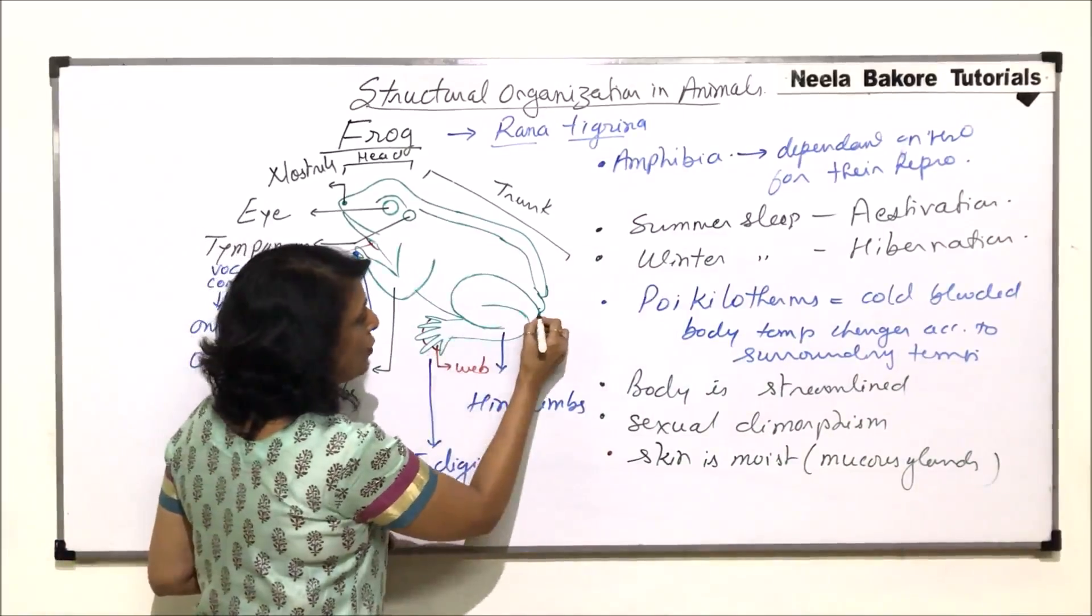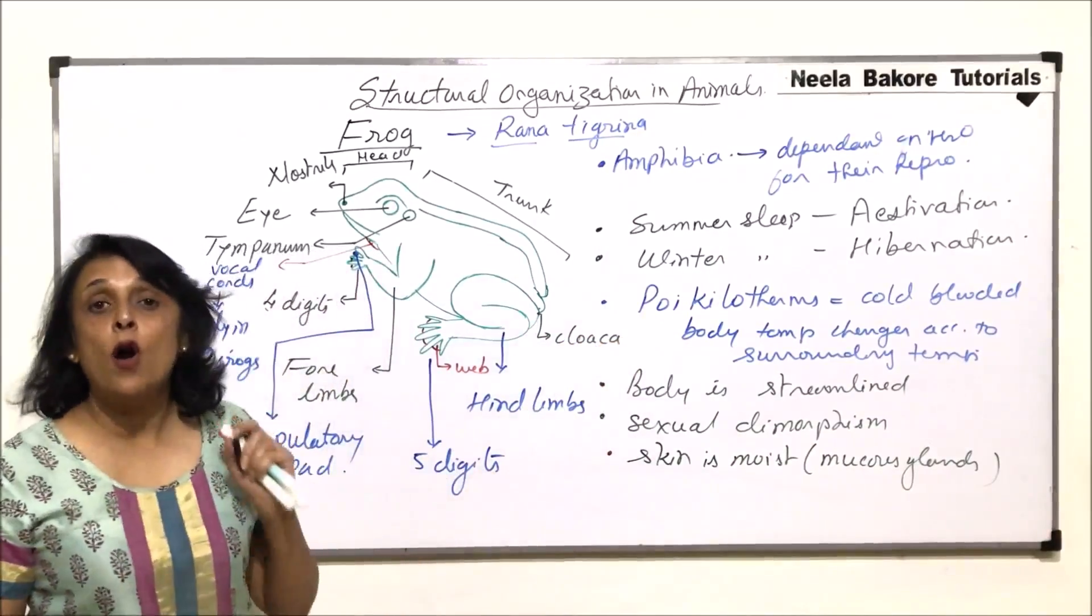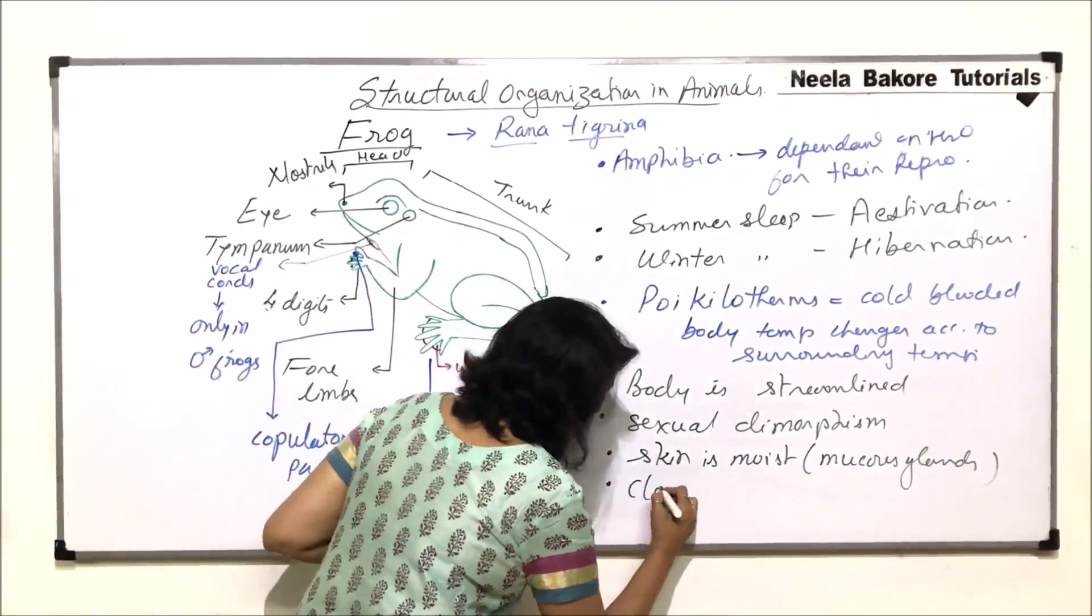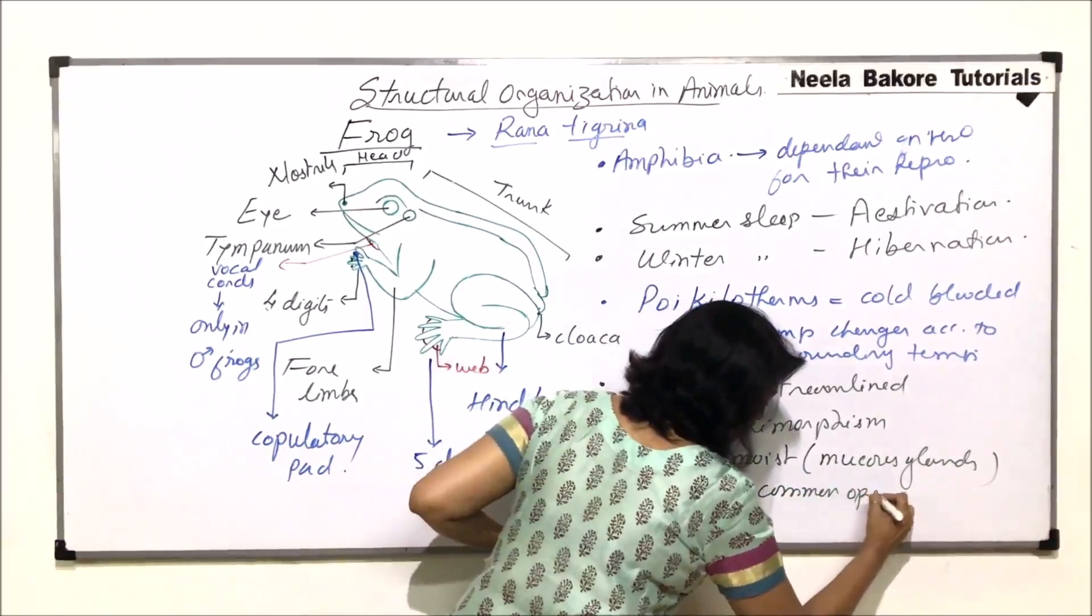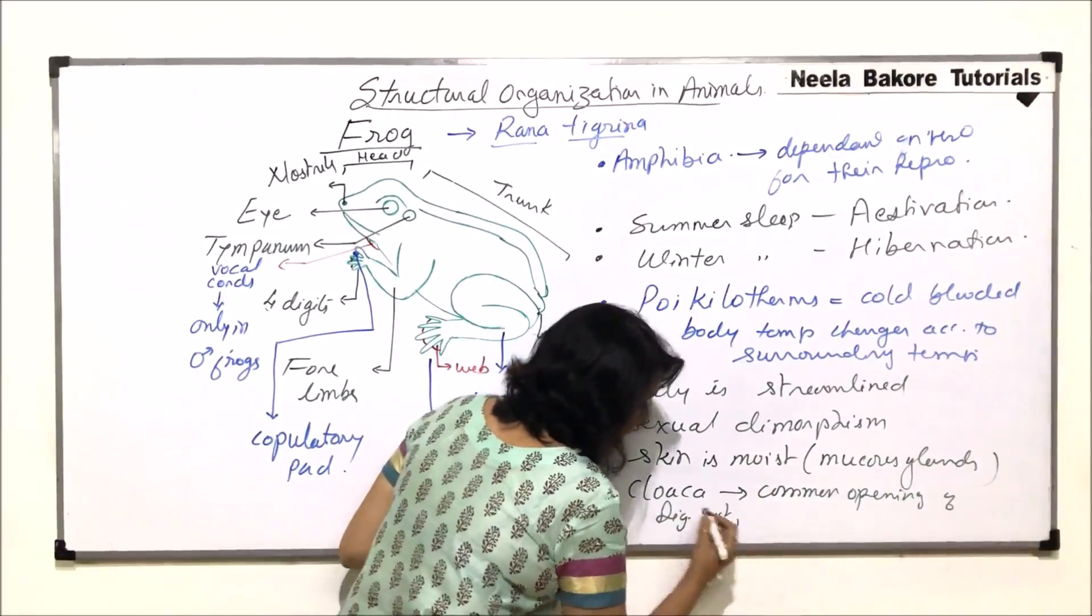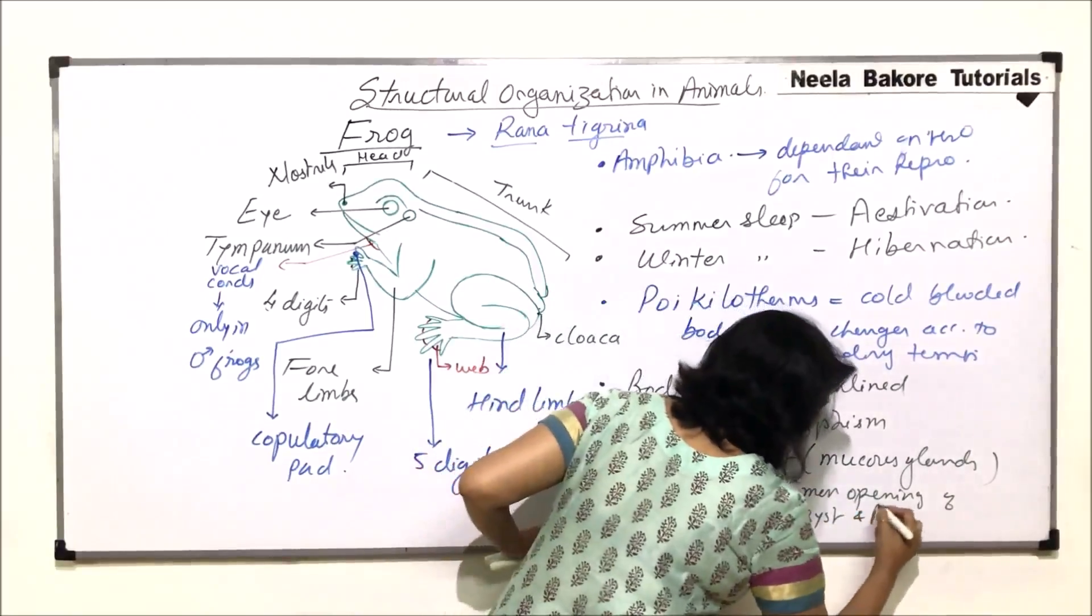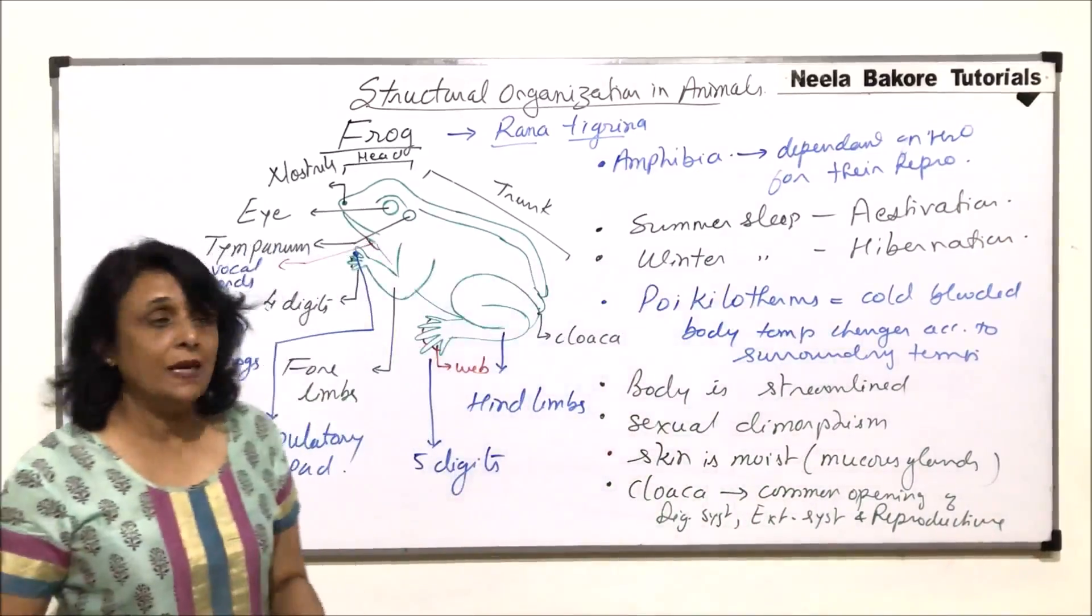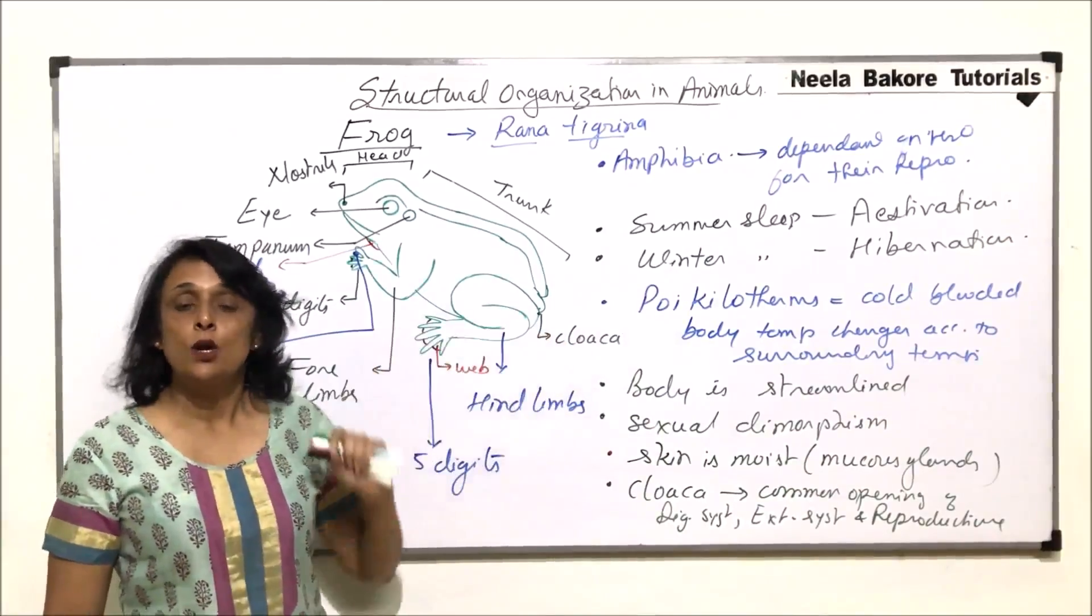Posterior most end, at the posterior end, there is an opening which is called cloaca. Cloaca is a common aperture or common opening of three systems. So amphibians or frogs, they have cloaca. Cloaca is a common opening of digestive system, excretory system and reproductive system. That means all three systems are going to open through a common aperture, and that aperture is known as cloaca.